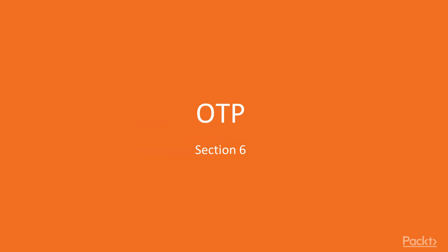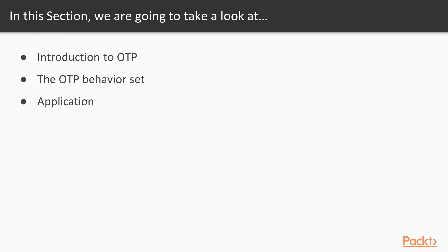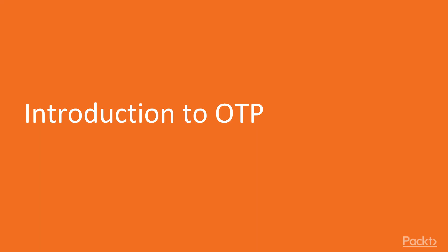Hi, Section 6, OTP. In this section, we're going to start our series about OTP. We'll do a brief introduction to OTP and proceed to explore its behavior set, which is comprised of a series of patterns for building robust applications. We'll then finalize the section by exploring the structure of an Elixir OTP application. And with that, let's move on to the first video, Introduction to OTP.